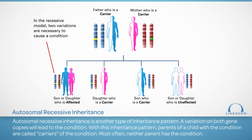Autosomal recessive inheritance is another type of inheritance pattern. A variation on both gene copies will lead to the condition. With this inheritance pattern, parents of a child with the condition are called carriers. In most cases, neither parent has the condition. Since autosomes are the same in both genders, both males and females can have an autosomal recessive condition.